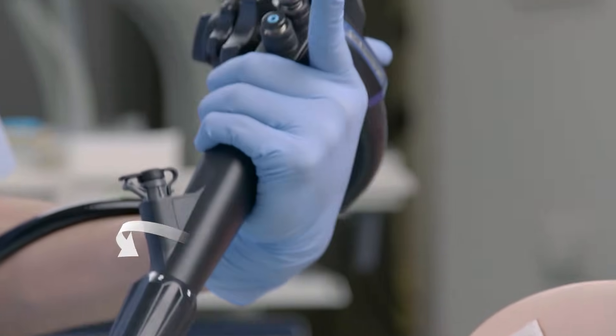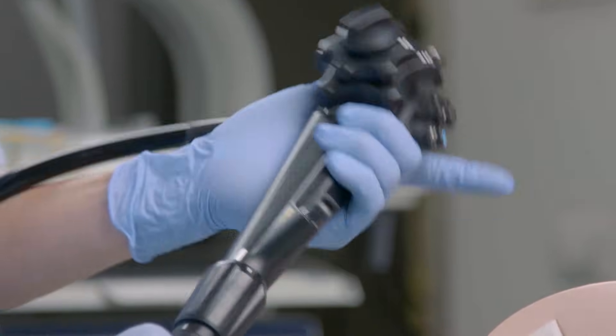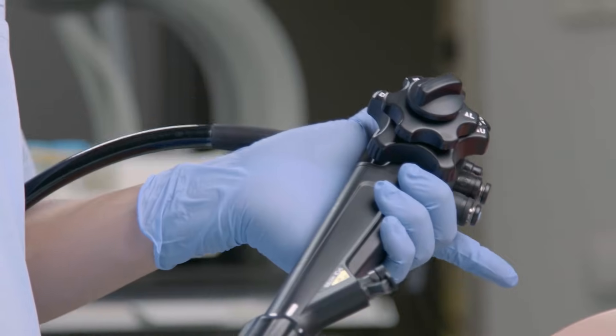By twisting your left wrist perpendicular to the axis of the colonoscope, you will easily achieve the right and left movement of the insertion tube.